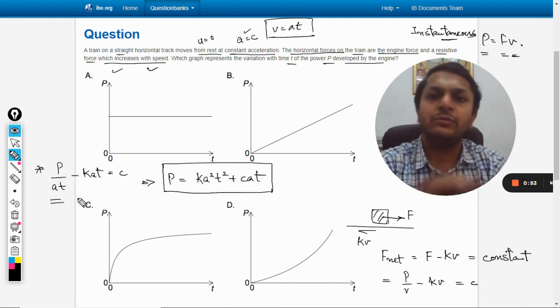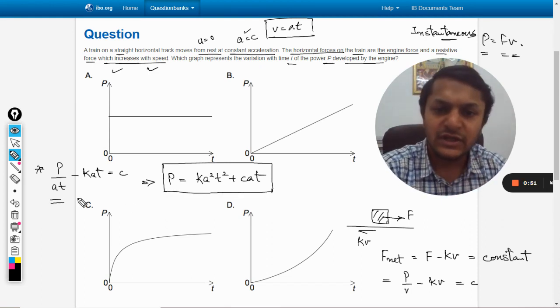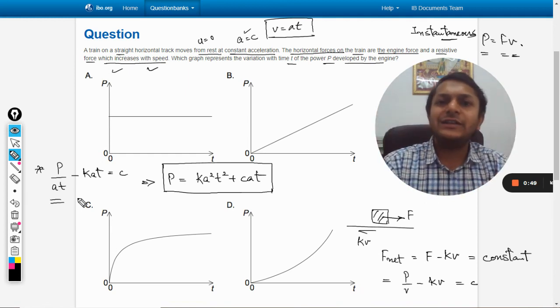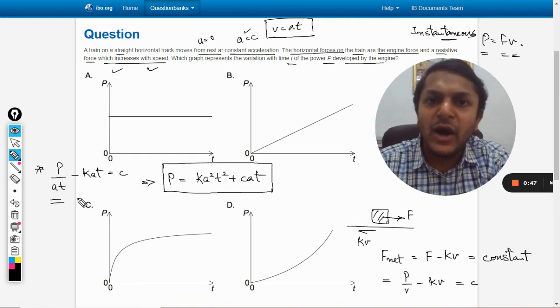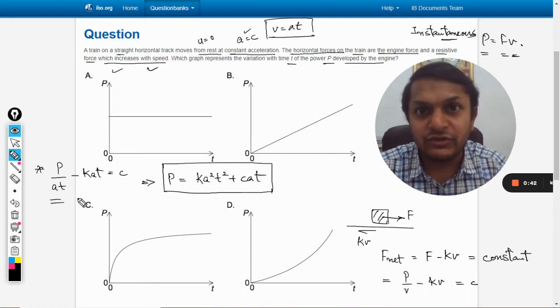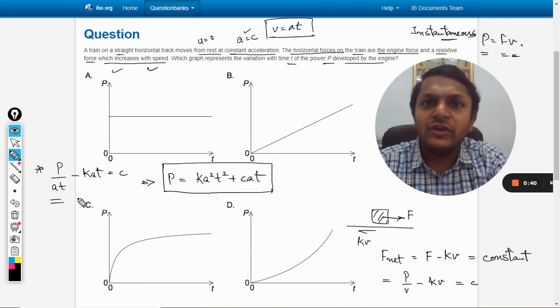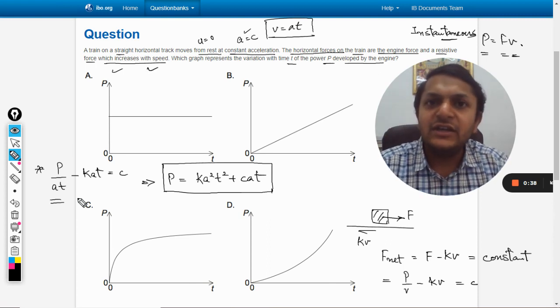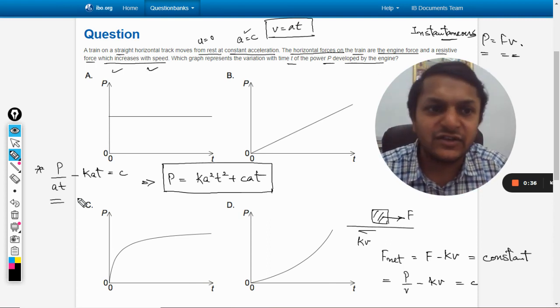When we multiply at on both sides of the equation, we get the variation of power with respect to time. Evidently it is a quadratic equation - the power here will have a parabolic variation with respect to time.